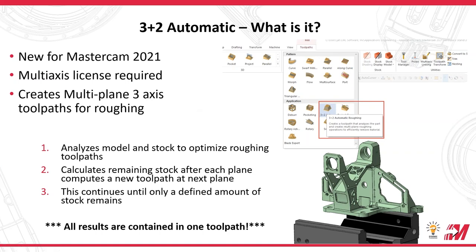So we're going to talk about 3 Plus 2 Automatic. The first question is: what is it? It's a toolpath that's new for Mastercam 2021. It does require a multi-axis license, unlike OptiRough which only requires a MIL-3D license — and that's actually changing in future releases. What it does is create multi-plane 3-axis toolpaths for roughing, combining different toolpaths along different planes all into one toolpath.